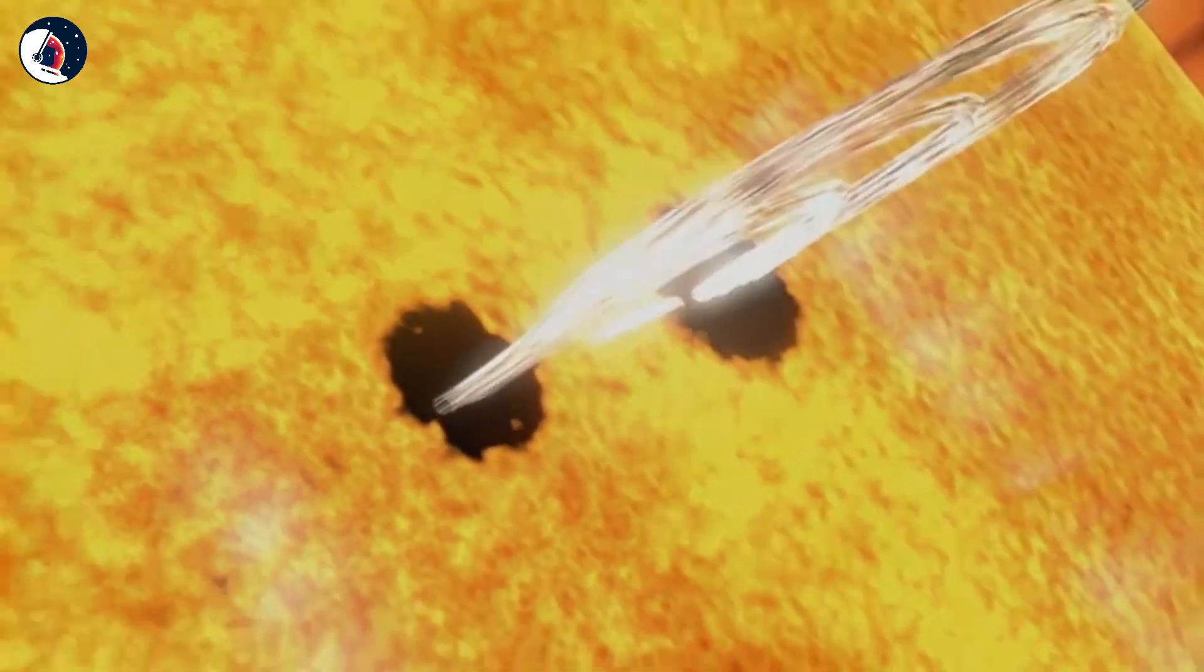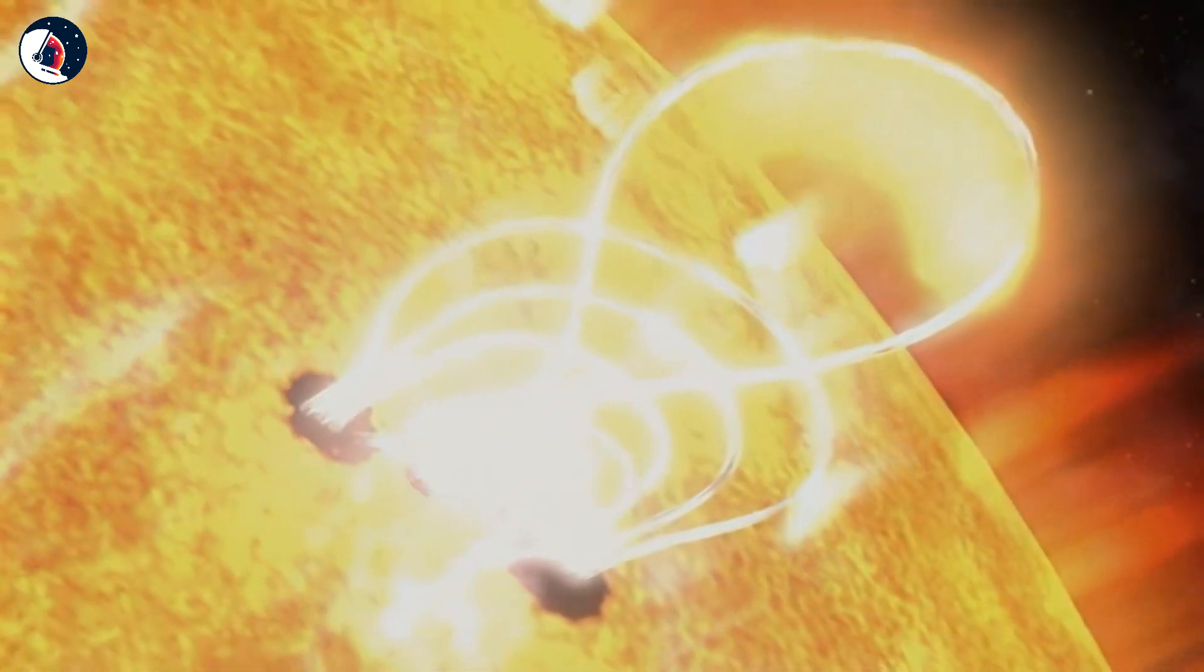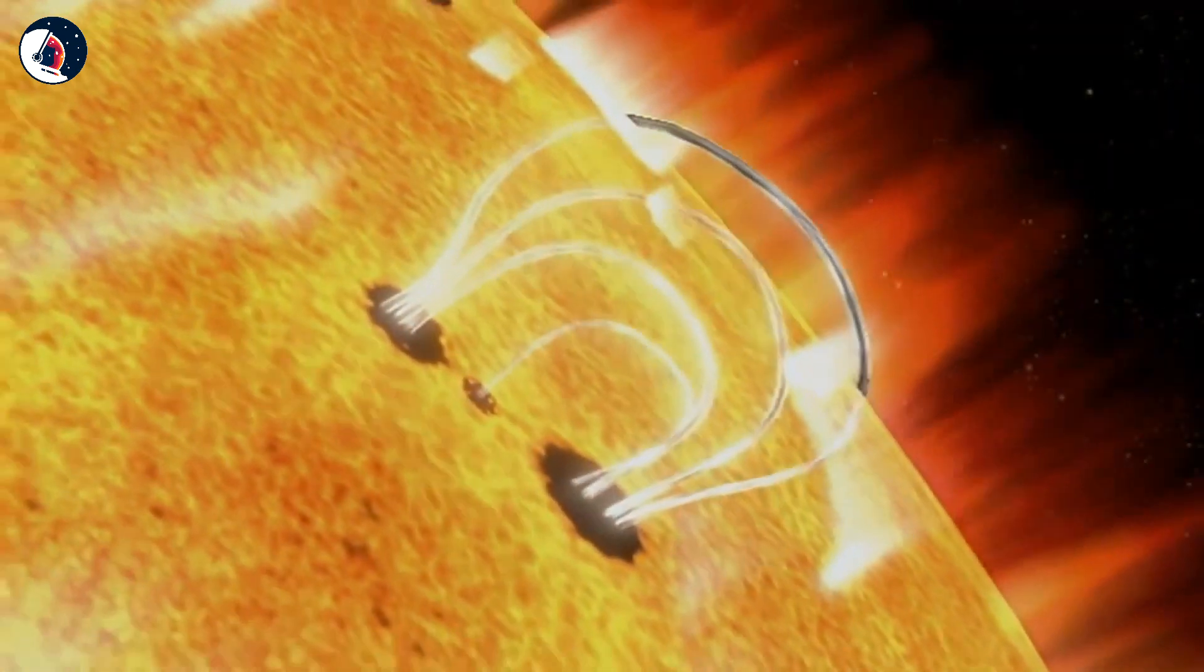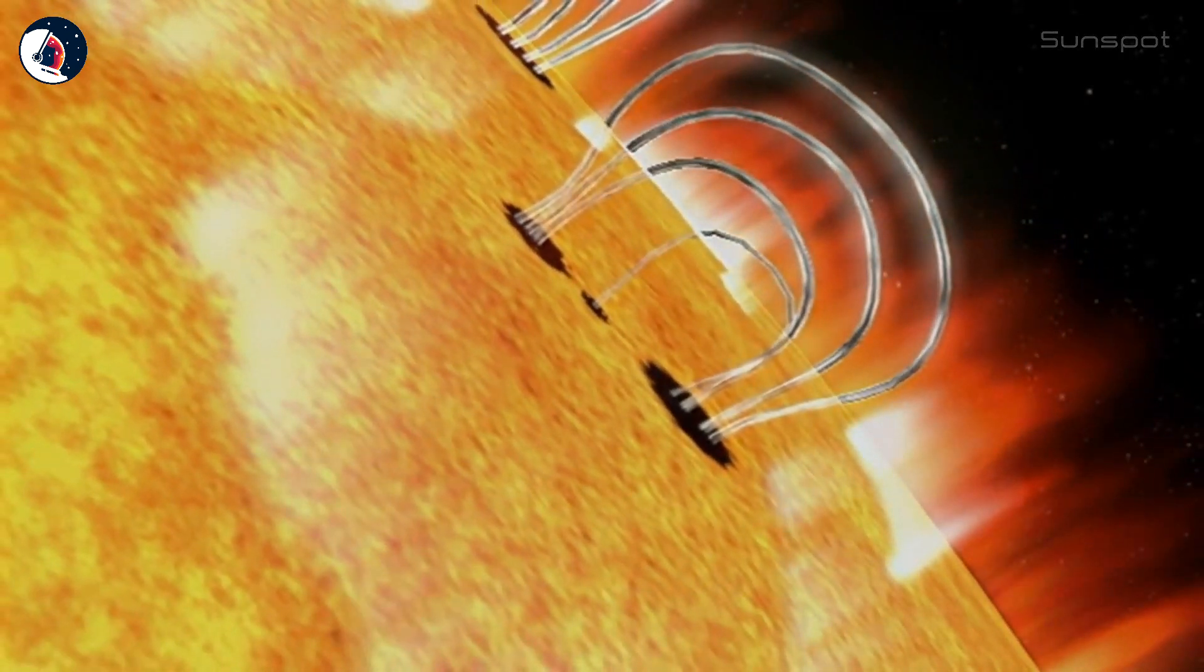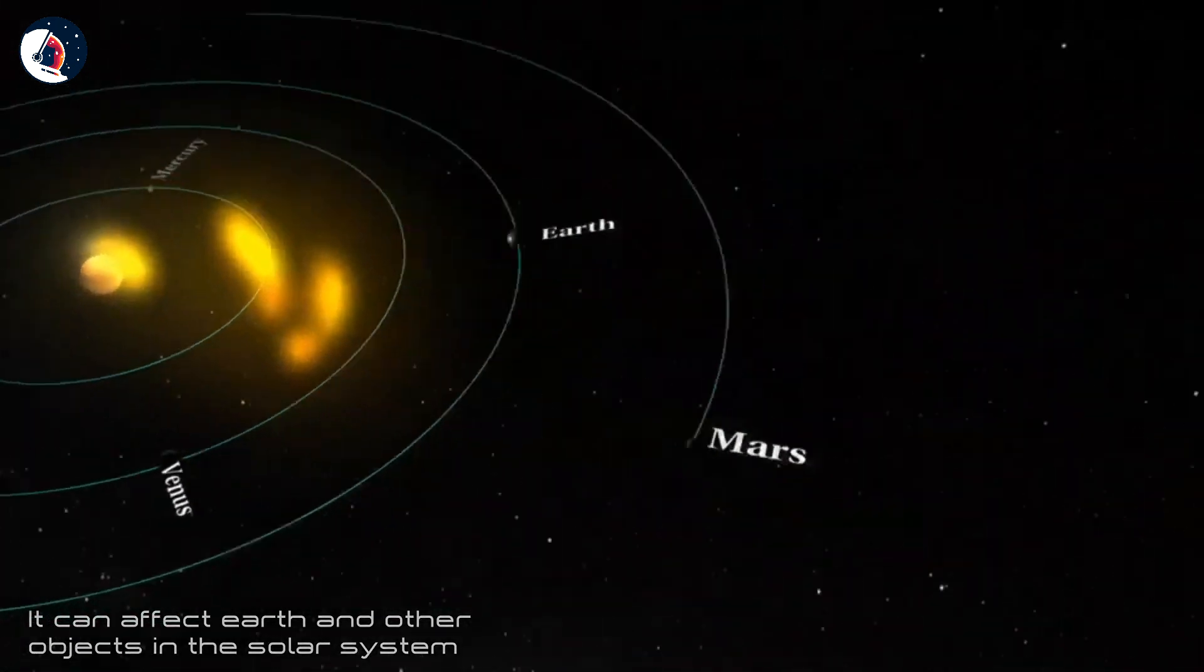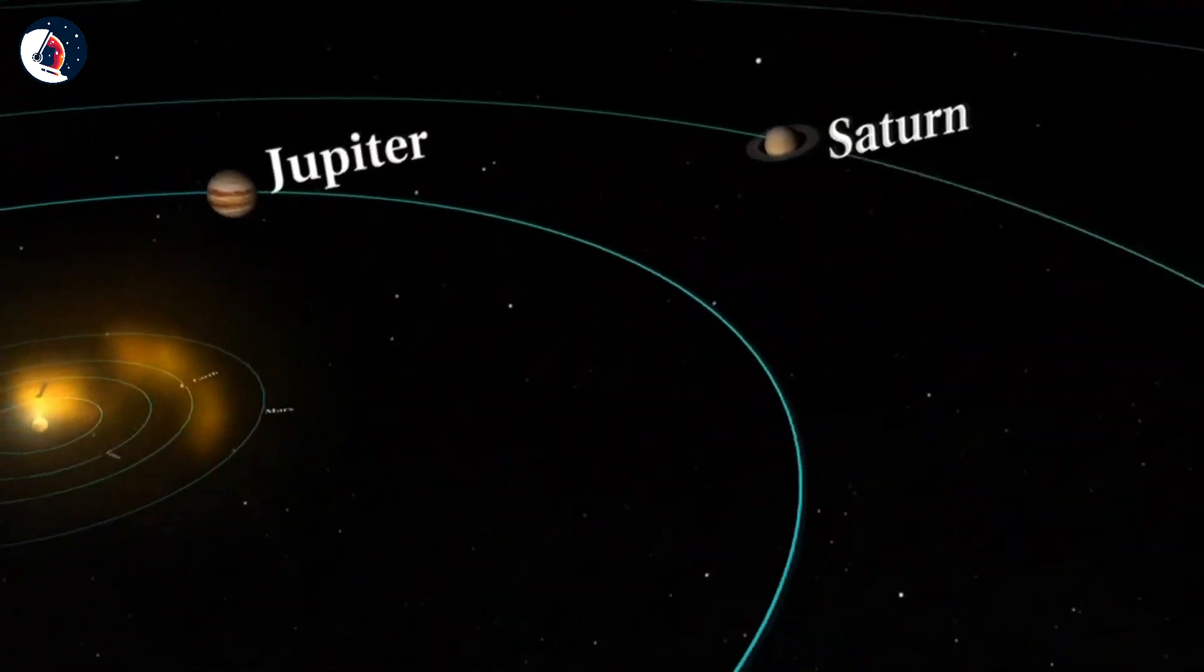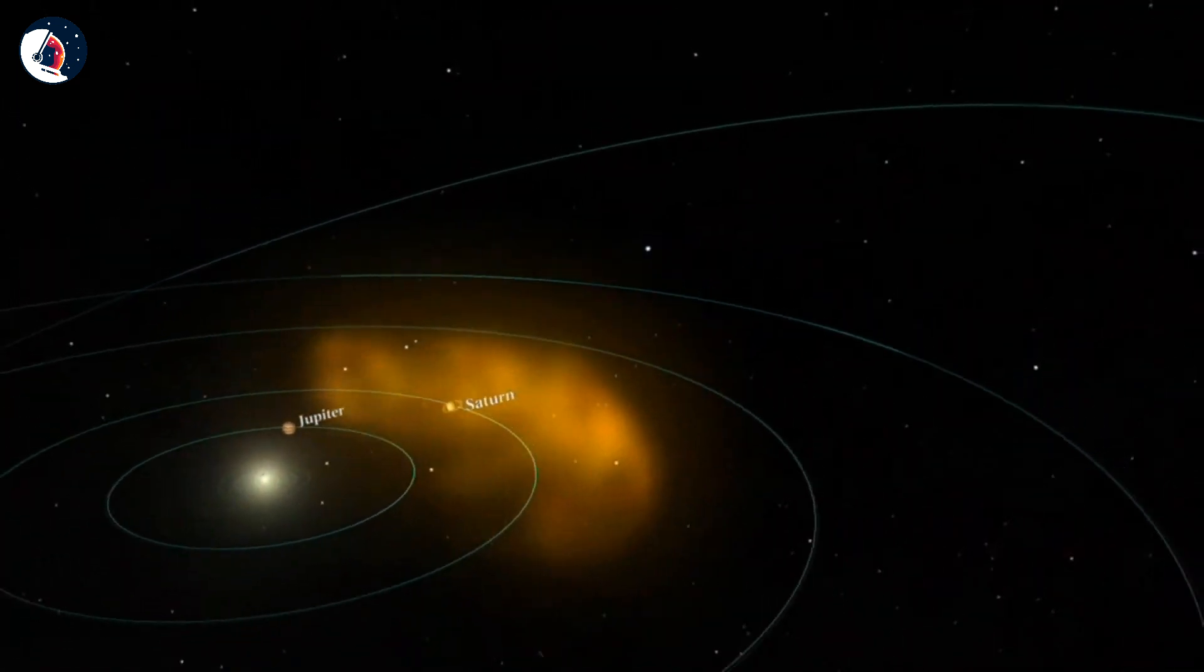Flares happen when the powerful magnetic fields in and around the sun reconnect. They are usually associated with active regions, often seen as sunspots, where the magnetic fields are strongest, which can affect Earth and other objects in the solar system. As the sunspots increase, so does the frequency and severity of flares and CMEs.